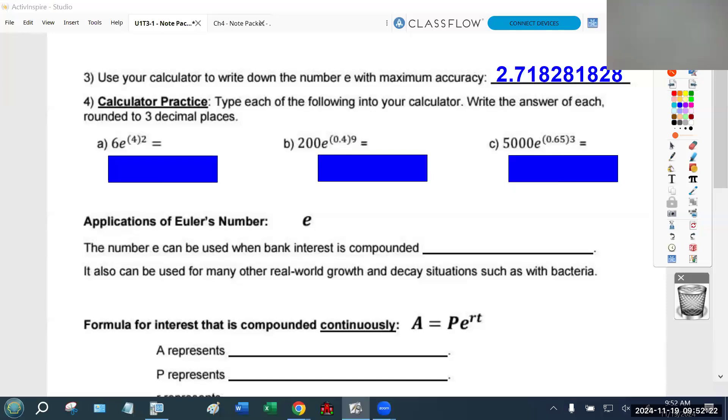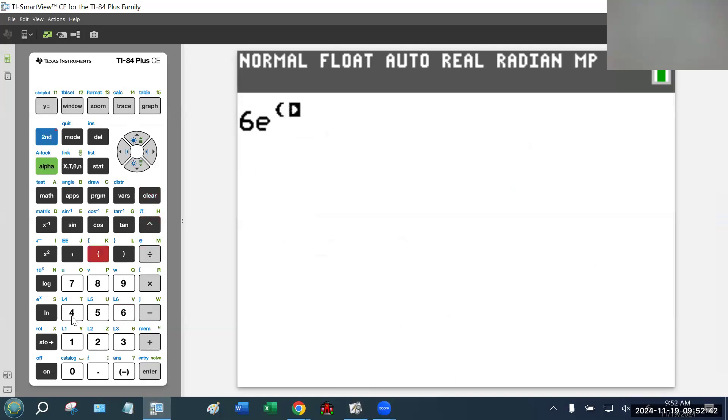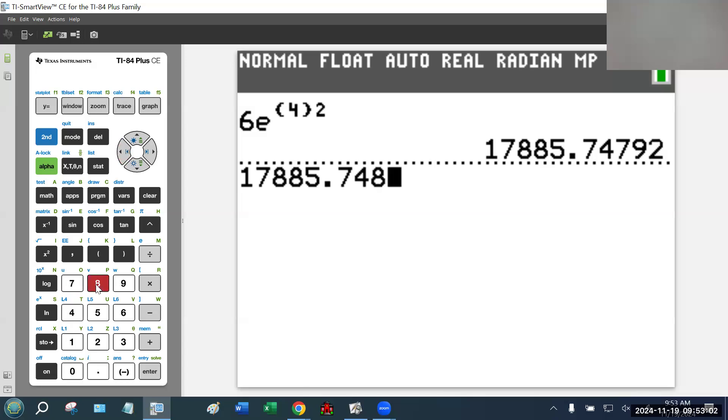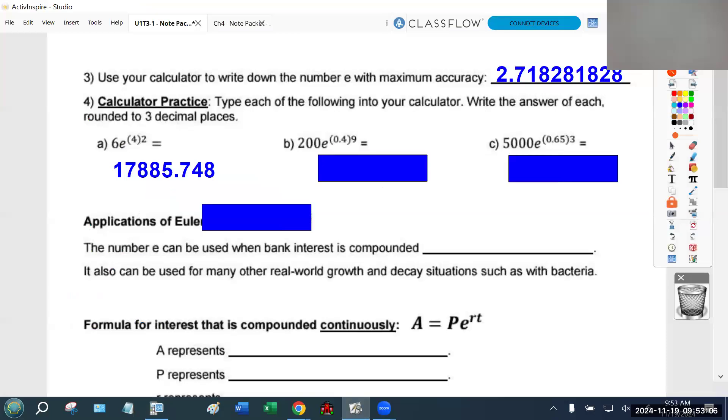The other three pieces is just let's get comfortable typing E into our calculator. The directions say calculator practice, type each of the following into your calculator, write the answer of each rounded to three decimals. The first one is 6e^(4×2). I'm going to write down 17,885. If you want to round to the third decimal, you have to ask yourself what is the next number. If that next number is a five or higher, in this case it's a nine, that means this should be rounded up. So that's 17,885.748. Take one minute to do the other two yourselves.